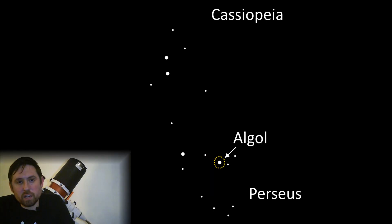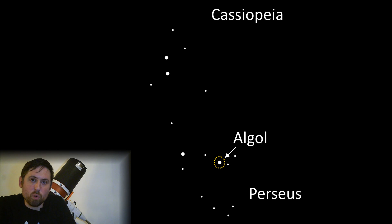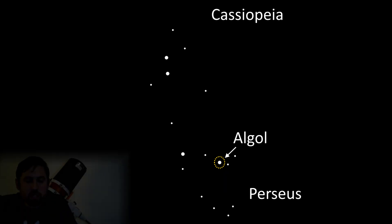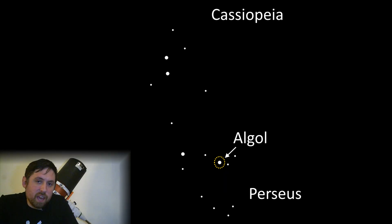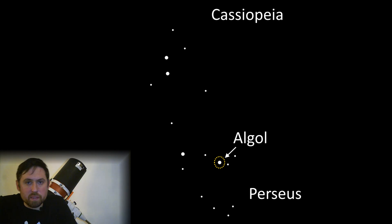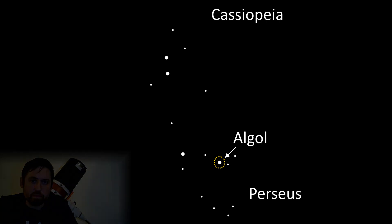Observing an eclipse of Algol is a good target for autumn, winter and spring skies, even when the full moon is out in force. To see when an eclipse of Algol occurs, just use the link to the Algol eclipse calculator detailed in the description below.